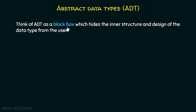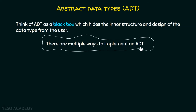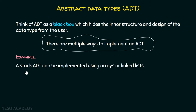Think of ADT as a black box which hides the inner structure and design of the data type from the user — it hides all implementation details. There are multiple ways to implement an ADT. For example, a stack ADT can be implemented using arrays or linked lists. It should be noted that stack itself is a data structure, and we can implement it using other data structures like arrays or linked lists.